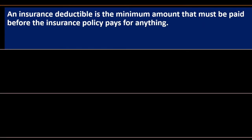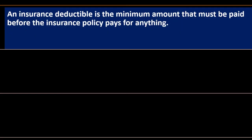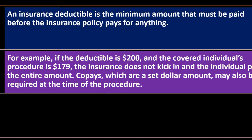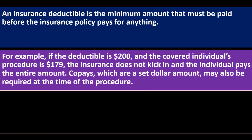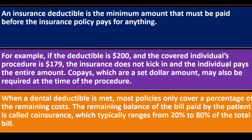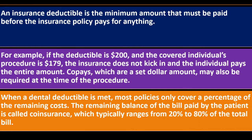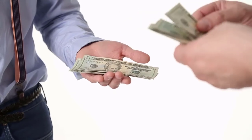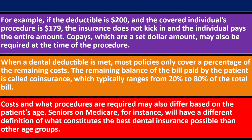Deductibles, co-pays, and co-insurance: a deductible is the minimum amount that must be paid before the insurance policy pays for anything. For example, if the deductible is $200 and the procedure costs $179, the insurance does not kick in and the individual pays the entire amount. Co-pays, which are a set dollar amount, may also be required at the time of the procedure. When the deductible is met, most policies only cover a percentage of remaining costs — the remaining balance paid by the patient is called co-insurance, which typically ranges from 20% to 80% of the total bill.